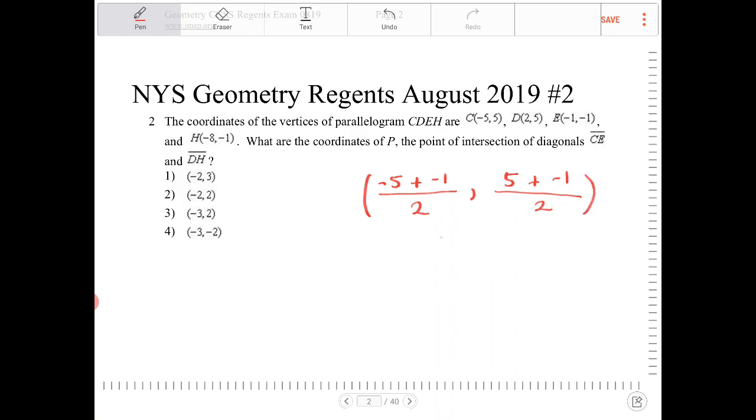The midpoint of CE, therefore, is going to be negative 3, comma 2.